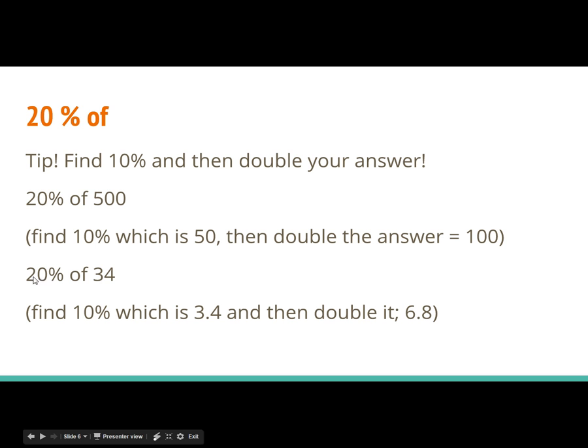If I wanted to find 20% of 34, here's my decimal point. I move it over 1. That gives me 3.4. Then I double it. So it's like 3.4 plus 3.4 is 6.8. Pretty easy, huh?